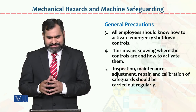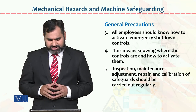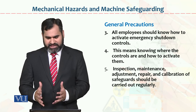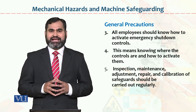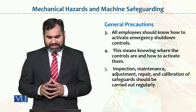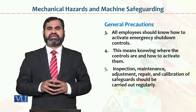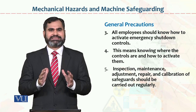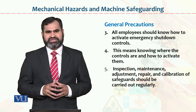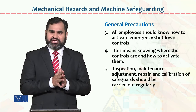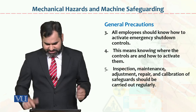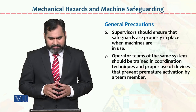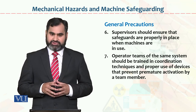Inspection, maintenance, adjustment, repair, calibration, and safeguarding should be carried out regularly. If you follow these things, there is a chance that organizations can operate without any incident. These are general precautions which organizations can use for equipment, plant, and machinery while machines are in use.